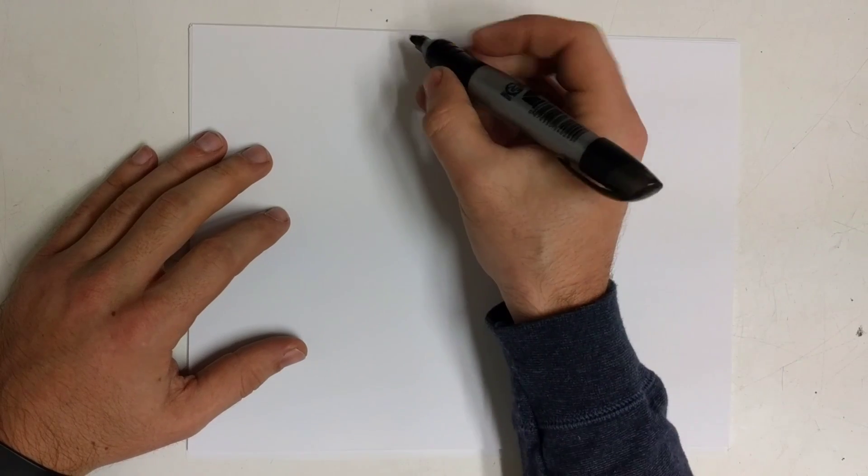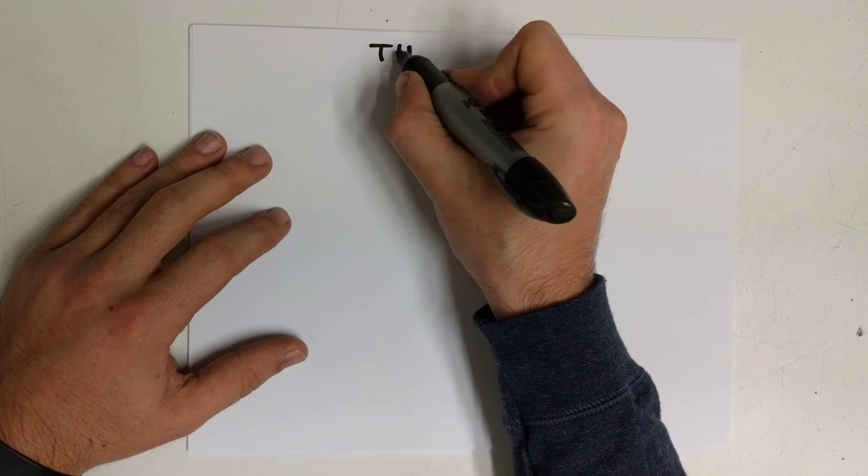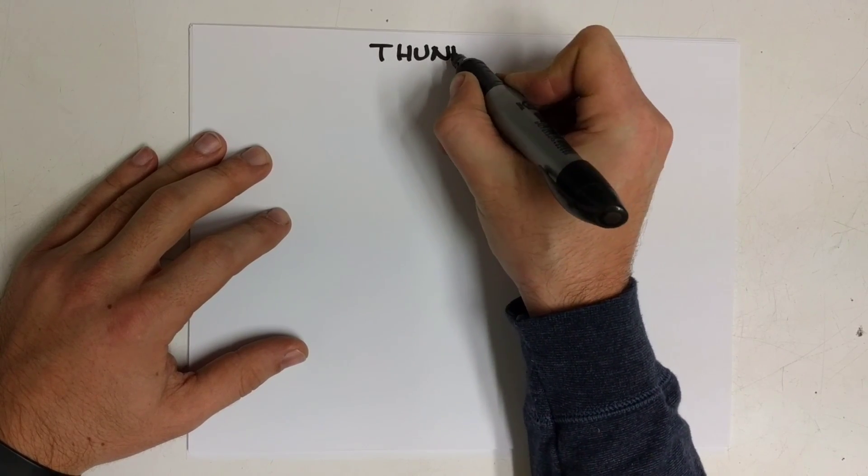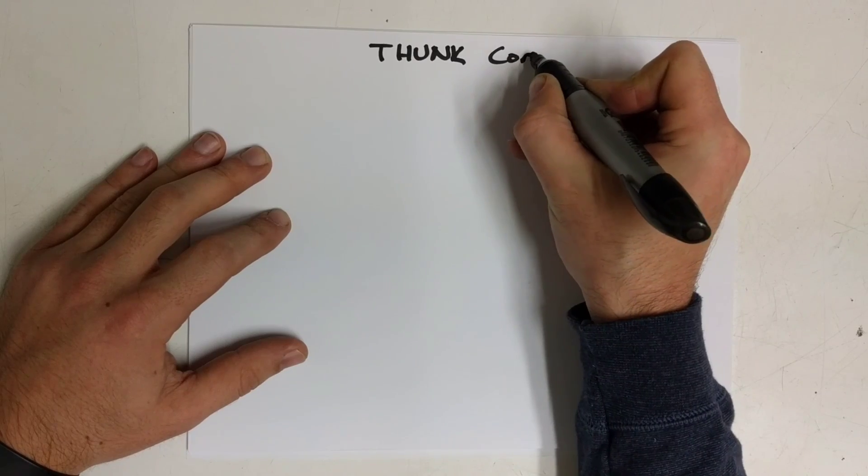Hey guys, there was an error in the most recent THUNK episode regarding Knuth's up arrow notation, and I just wanted to set the record straight.